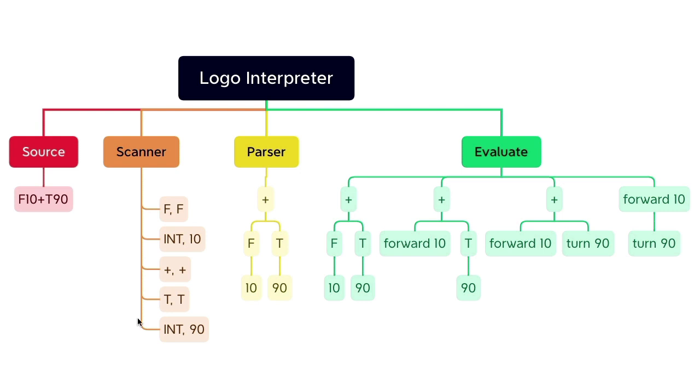Then we parse those tokens and we get the following tree. We have the plus operation, and on the left-hand side we have a subtree whose head is F, and F has a subtree 10 which is a leaf. On the right-hand side we also have a subtree with a head T, and that T has a subtree of 90 which is a leaf.